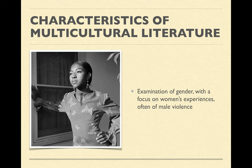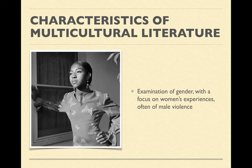The second characteristic I want to look at relates strongly to what I was just discussing about the end of Komunyakaa's poem: an examination of gender, with a focus on women's experiences, often of male violence or patriarchal oppression. We talked about how the mid-century period was a very masculinist, very male-dominated period of literary history in the United States, and how the last part of the 20th century changed that because of demographic shifts — more and more women were able to seek higher education, enter professions, and become writers. The multicultural period is very much one that's concerned with gender.